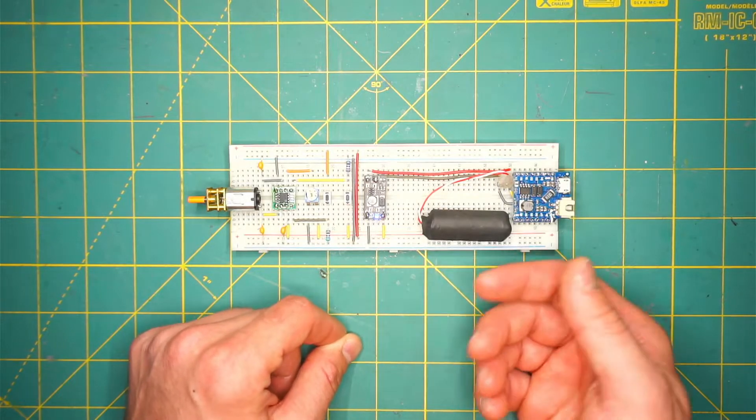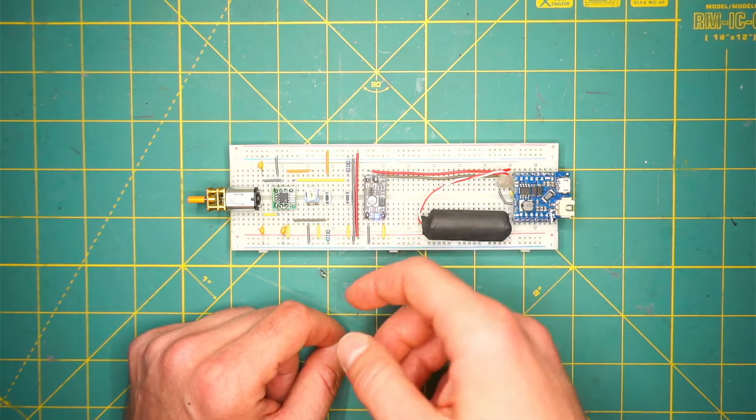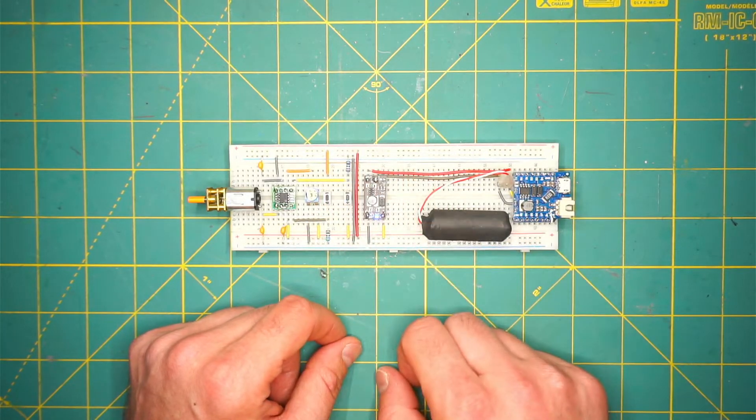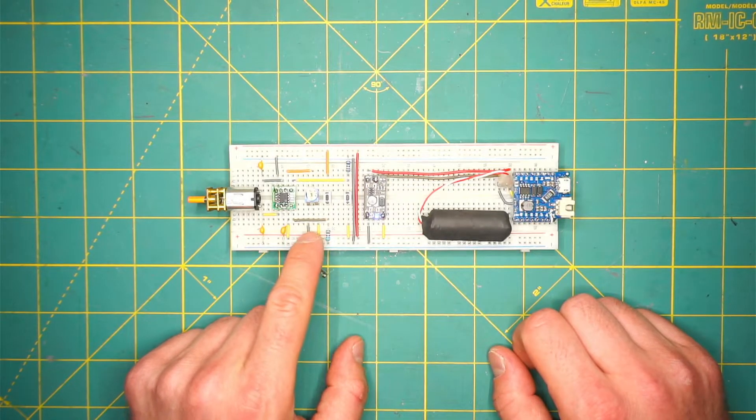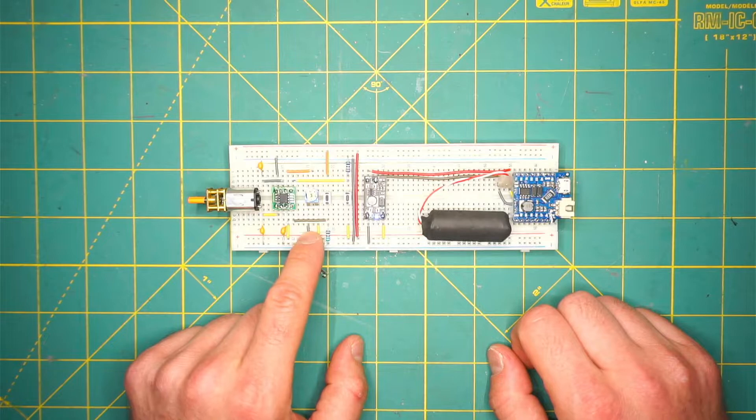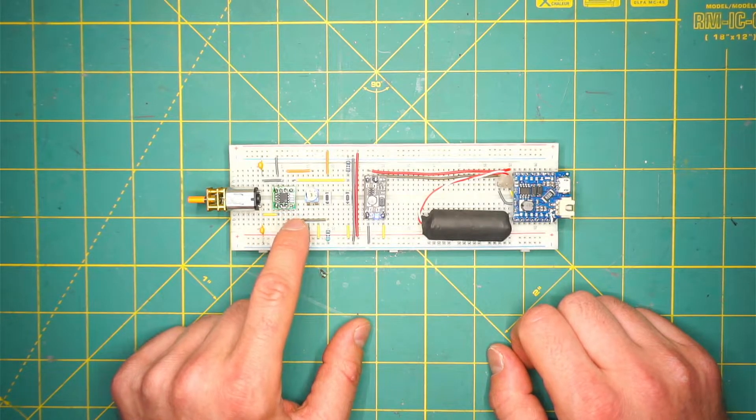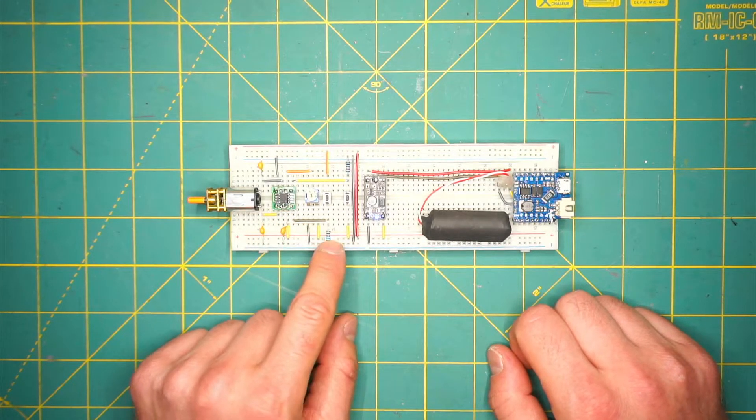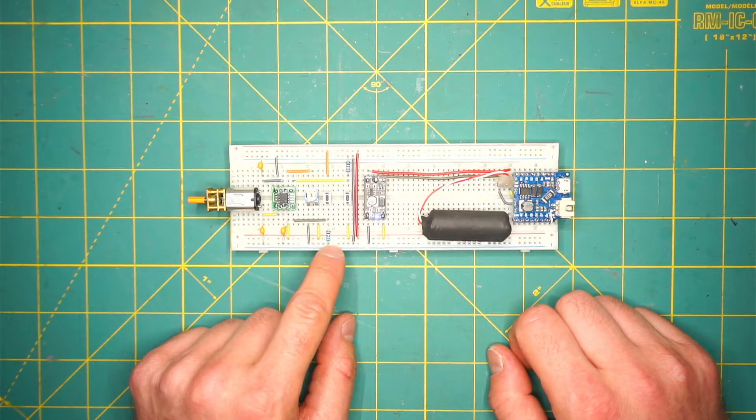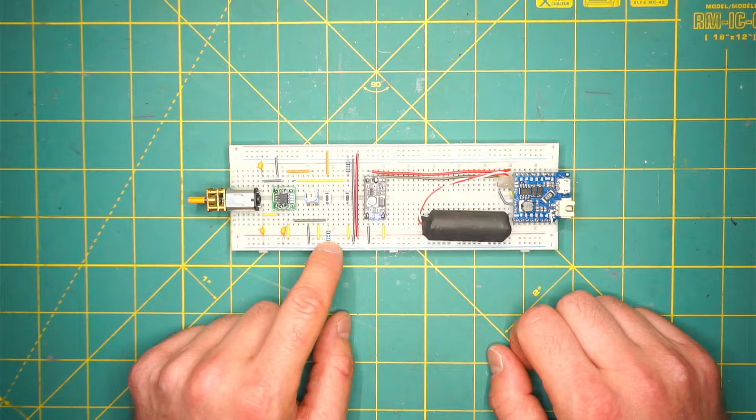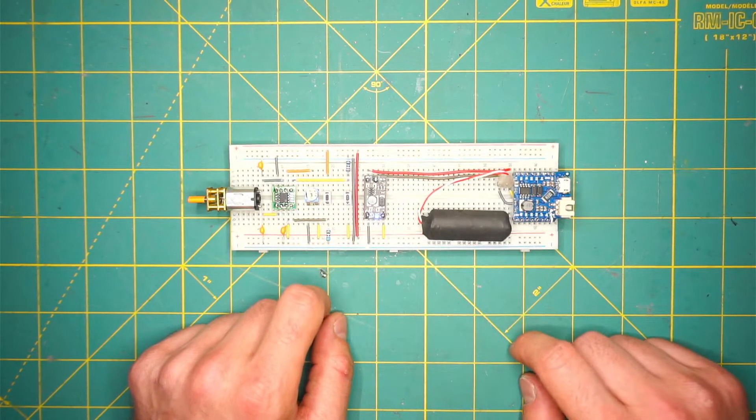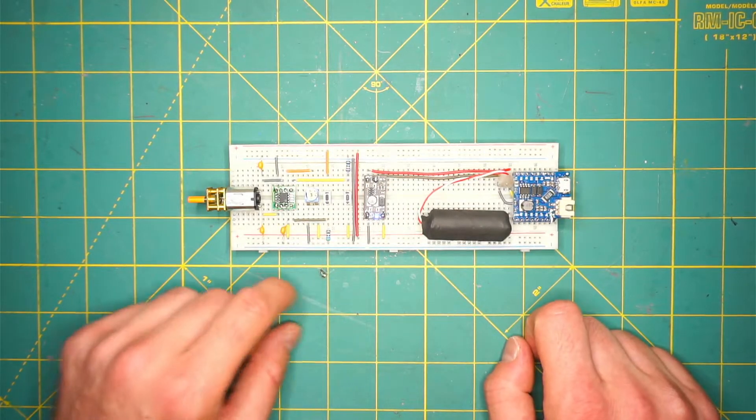So we have one direction, the other direction, brake, and when the two outputs are low, we have idle. I couldn't find if this IC has internal pull-down, so I added two 4.7K resistors pulling the inputs down.